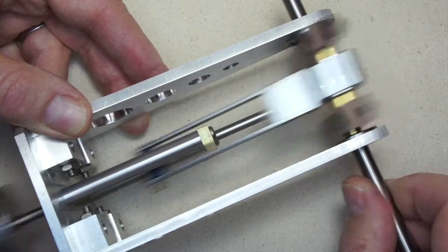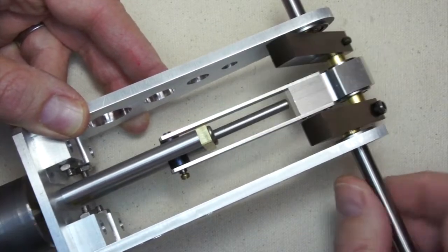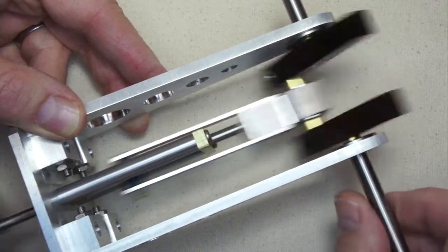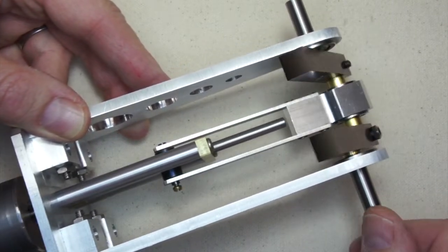You can see how easily it works here. I'm just twisting it with my thumb and forefinger. My arthritic thumb is not hurting too much because it just turns so easily.